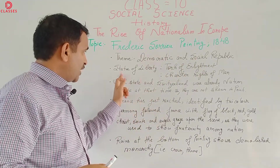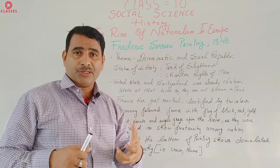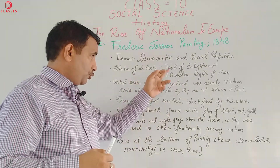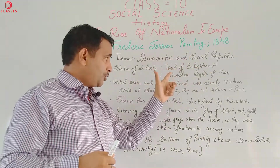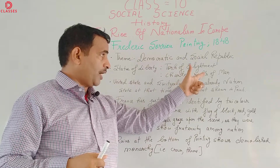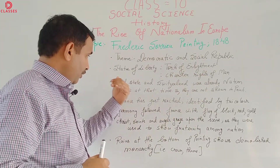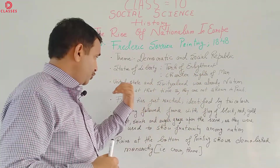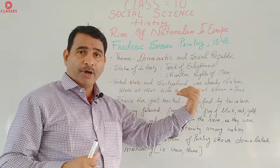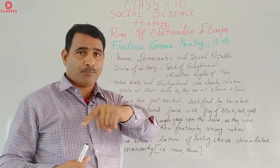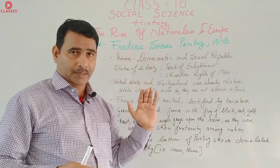Next is the Statue of Liberty. Why did this painter or artist use the Statue of Liberty? To show the torch of enlightenment in one hand and the torch of the rights of man in the other hand. The United States and Switzerland were not shown by the artist in the painting — why? Because they were already nation-states at that time.